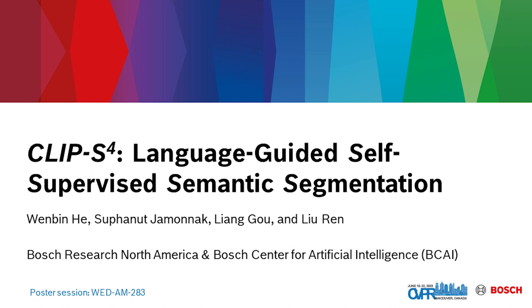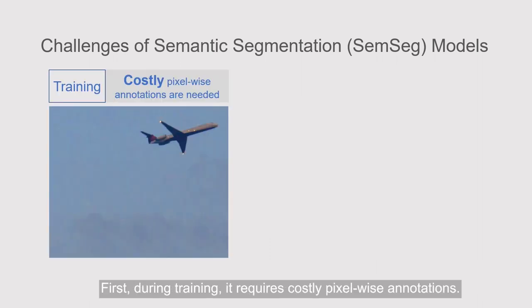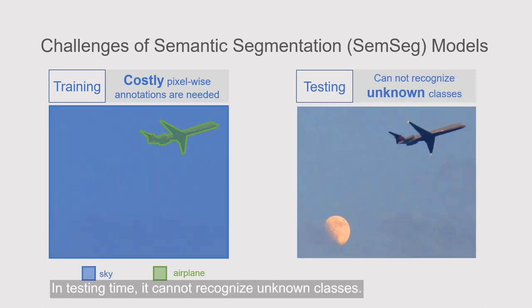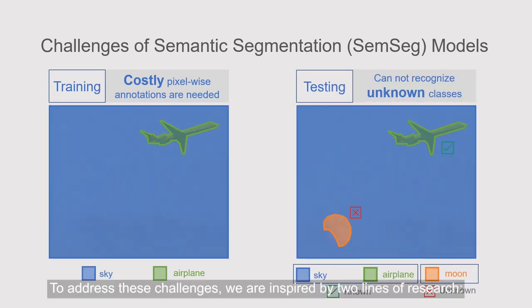In the deep learning era, there are two main challenges of semantic segmentation models. First, during training, it requires costly pixel-wise annotations. In testing time, it cannot recognize unknown classes.